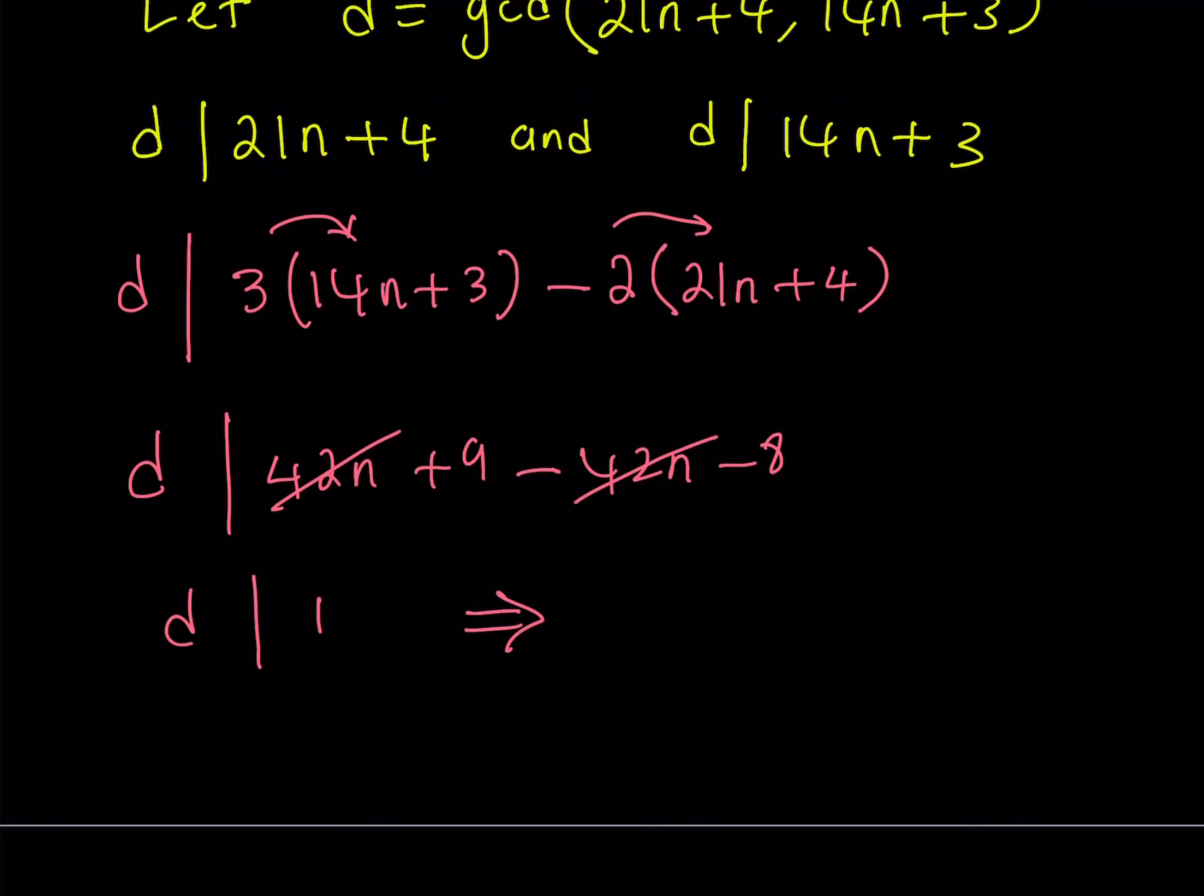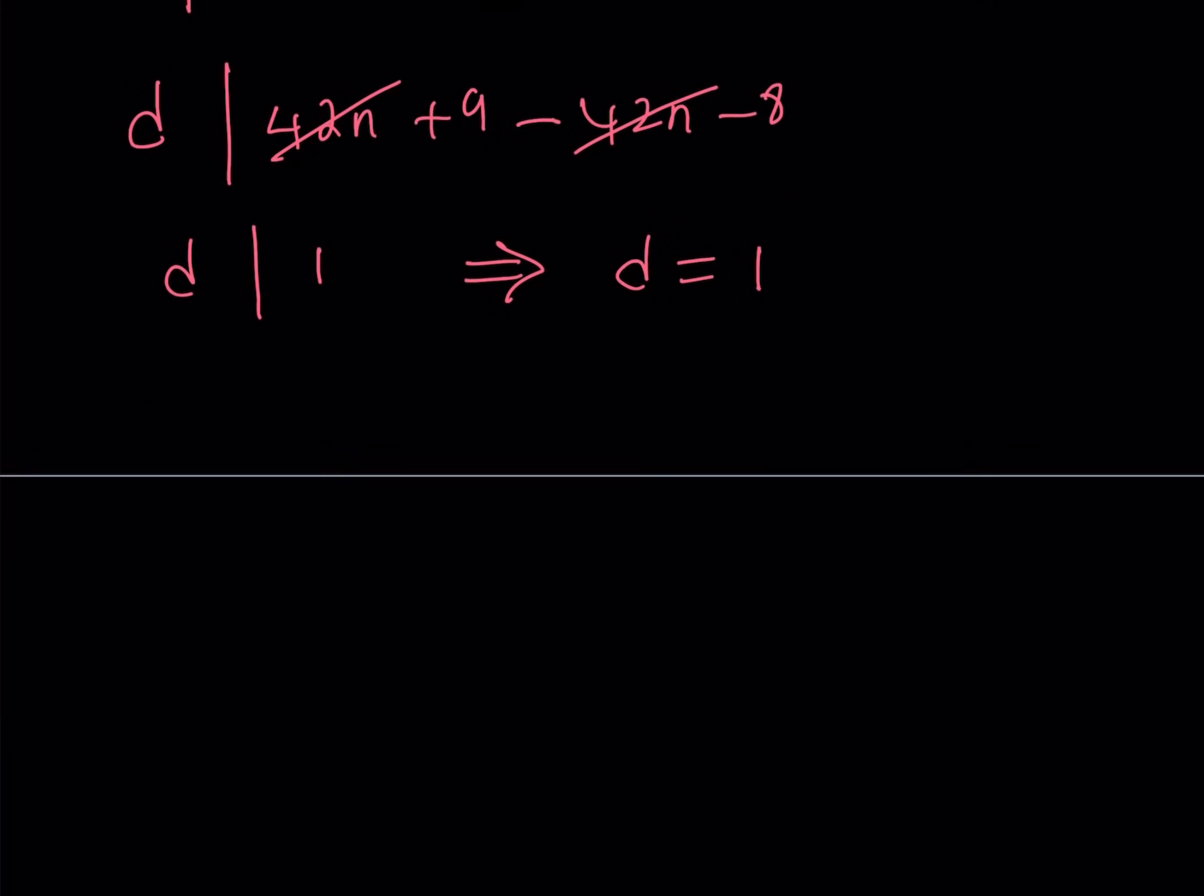But in this case we're looking for a positive integer because GCD is supposed to be positive. So this implies that d is equal to 1. Now what is that supposed to mean for d to be equal to 1? d was the GCD of these two numbers, remember? It just means that the GCD of 21n plus 4 and 14n plus 3 is equal to 1, and this just means that 21n plus 4 divided by 14n plus 3 is irreducible because the GCD of the numerator and the denominator is 1.